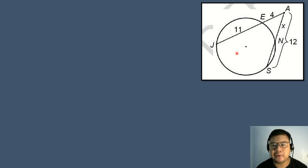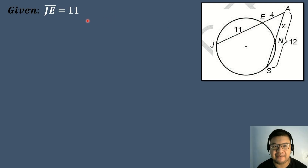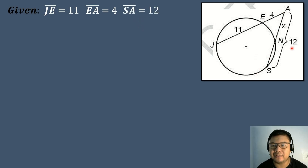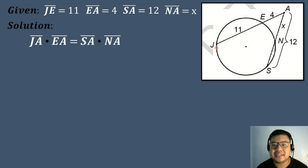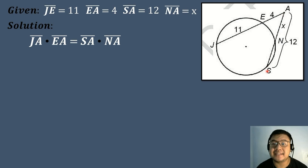Let's have another example. We have a given circle where segment JE equals 11, segment EA equals 4, and segment SA equals 12. We need to find the measure of segment NA. The formula is: segment JA times segment EA equals segment SA times segment NA.